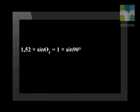Now we can substitute our variables into our equation. So, 1.52 times sine of the critical angle equals 1 times sine of 90 degrees, which means that the critical angle as light travels from glass into air is 41.14 degrees.